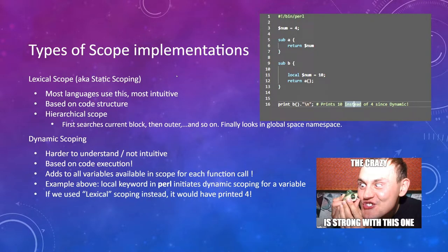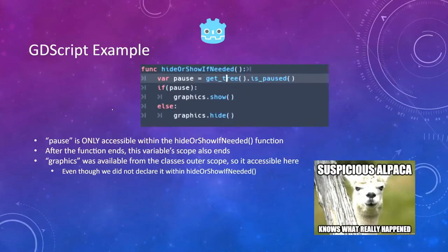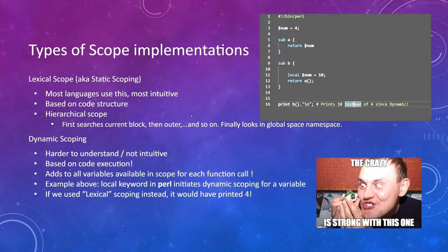Let's talk about types of scope. There's lexical scoping, which is the normal stuff — variables are defined in a well-defined structure and when they go out of that structure they can no longer be accessed. There are also non-hierarchical types called dynamic scoping, which is really unusual, not used very often, and you usually have to do something very specific to enable it. It's based on code execution.